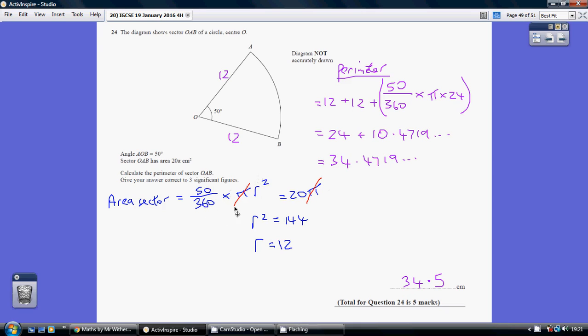So divide through by pi and we get 50 over 360 times r squared equals 20. So divide through by 50 over 360 and we get r squared equaling 144. Square root, r equals 12. So the radius here is 12.